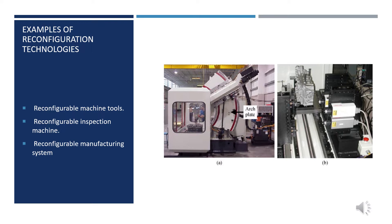The RMT configures to five angle positions from 15 degrees to 45 degrees in steps of 15 degrees, and reconfiguration from one angle to another takes less than 2 minutes. It was utilized to mill and drill engine blocks at angles of 30 to 40 degrees.